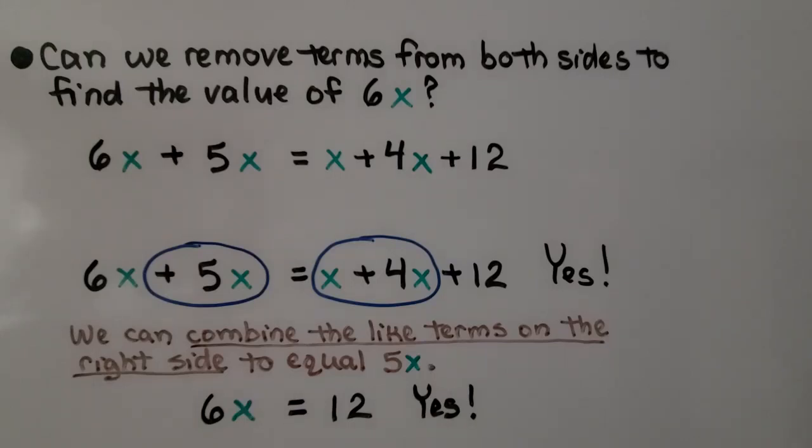we can combine the like terms on this right side to equal 5x. Remember there's an invisible one in front of this x. We have 1x plus 4x. That makes 5x.